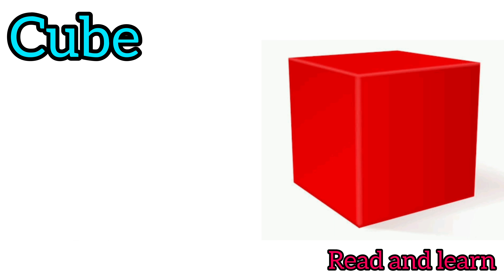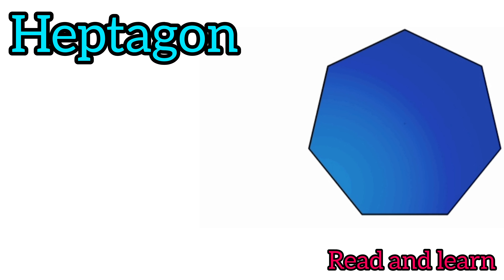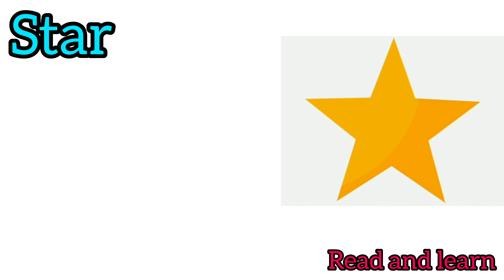Cube — cube means Ghanchetra. Heptagon — heptagon means Saat Kodak.